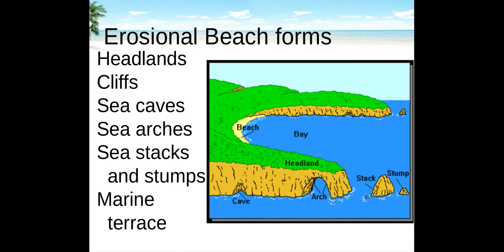A headland is a protruding bit of land that absorbs much of the wave's energy. Wave cut cliffs and sea caves are carved out by wave activity. Sea arches form where sea caves in headlands erode all the way through. Sea stacks form when the tops of sea arches erode away completely. The uplift of the wave cut bench generates a marine terrace. Wave erosion increases with more shore exposed to the open ocean, smaller tidal range, and weaker bedrock.